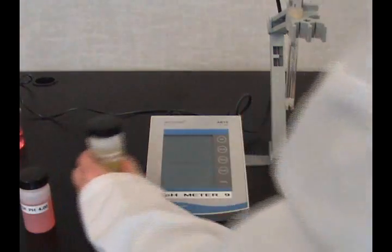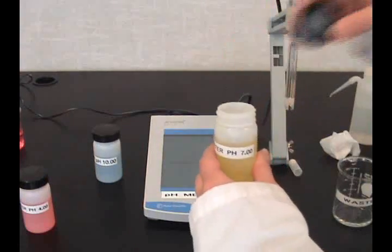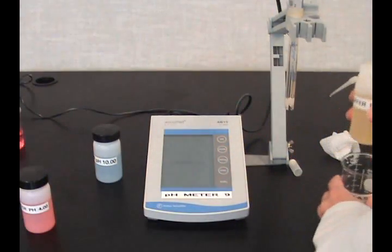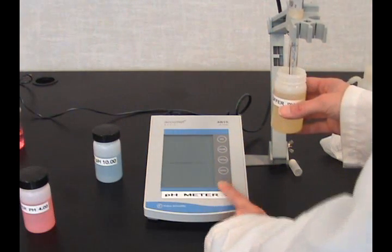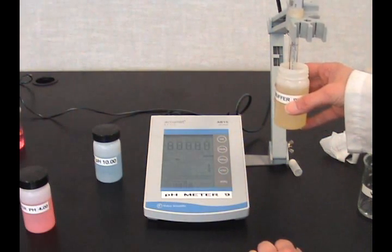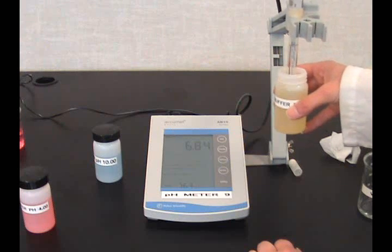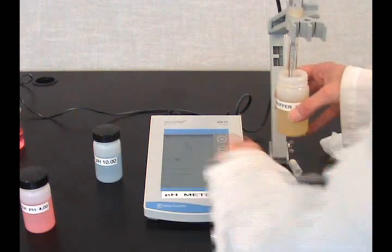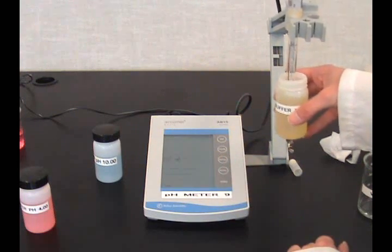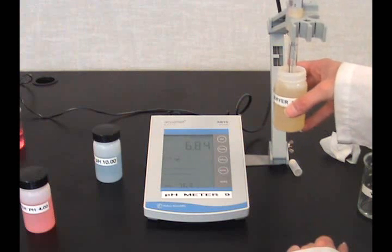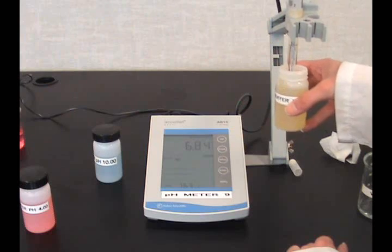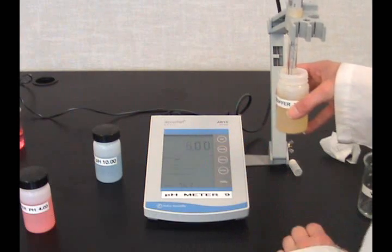Select a buffer. Ideally, 7 is used first. Immerse the probe in the buffer while swirling or stirring it constantly. Press the standby button. The buffer group will display in the standardization mode. When it stabilizes, press the standardized button. This sets the buffered standard.